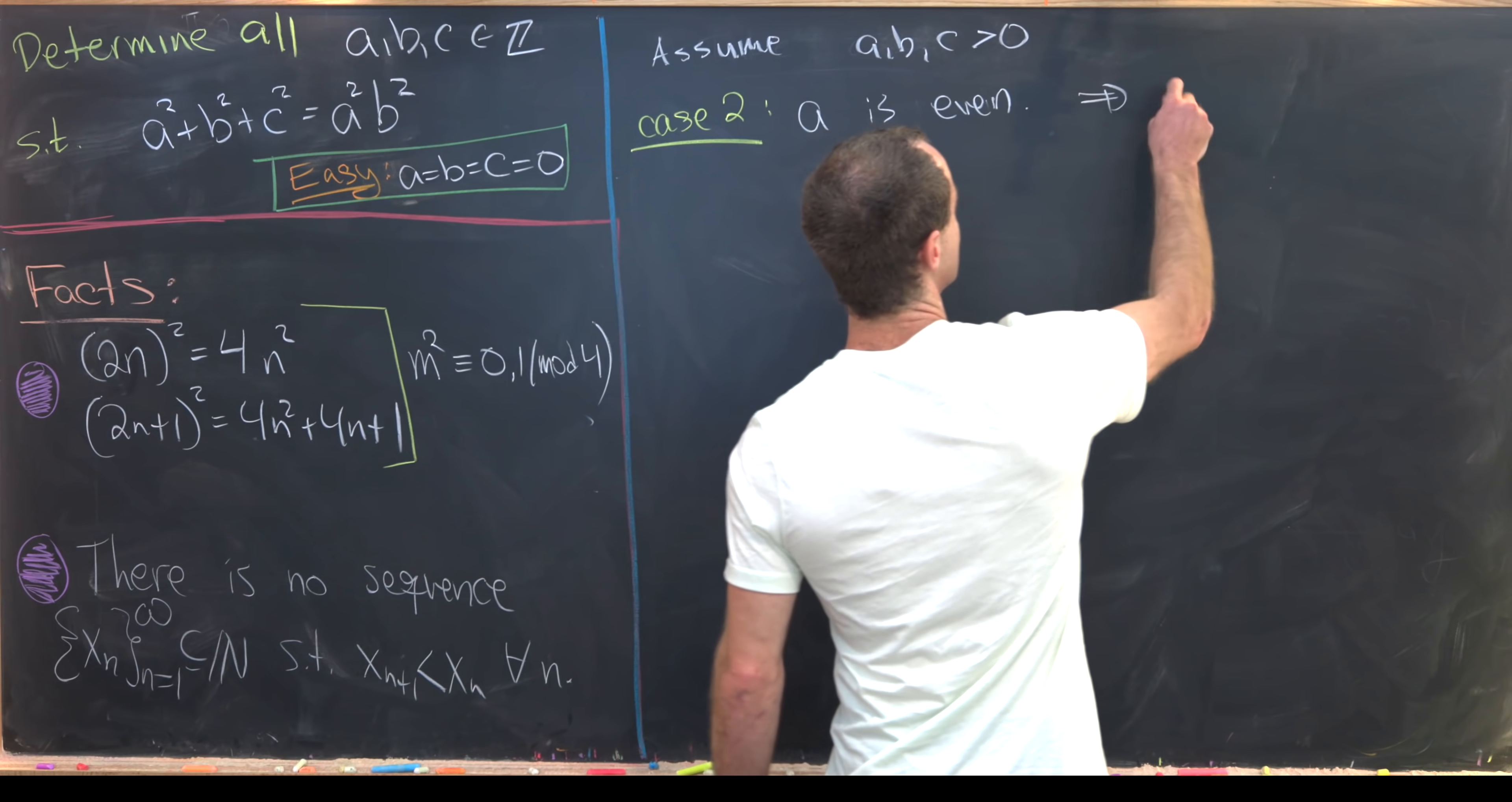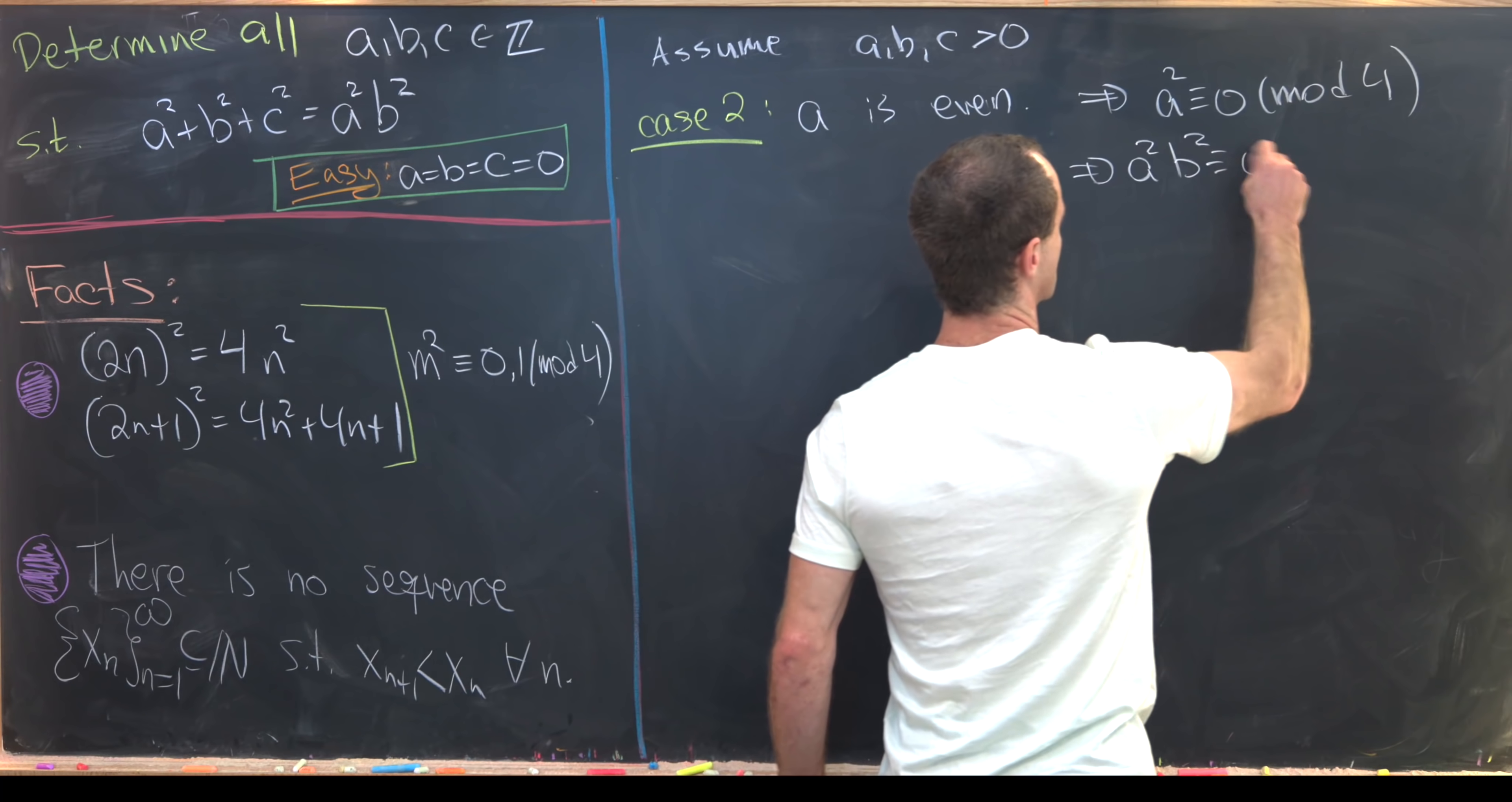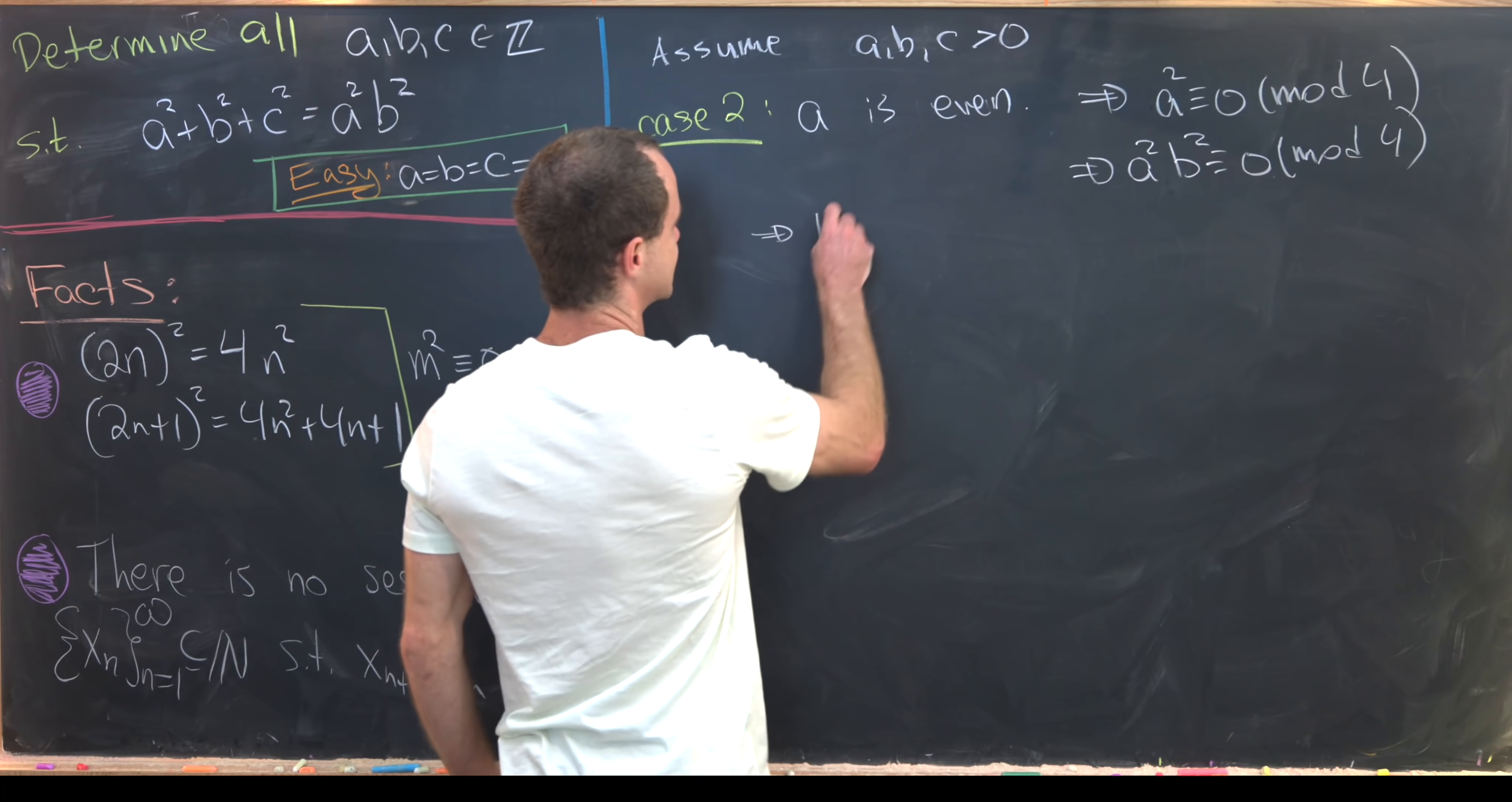So if a is even, that tells us that a² ≡ 0 (mod 4), but that tells us that a²b² is also congruent to 0 mod 4.